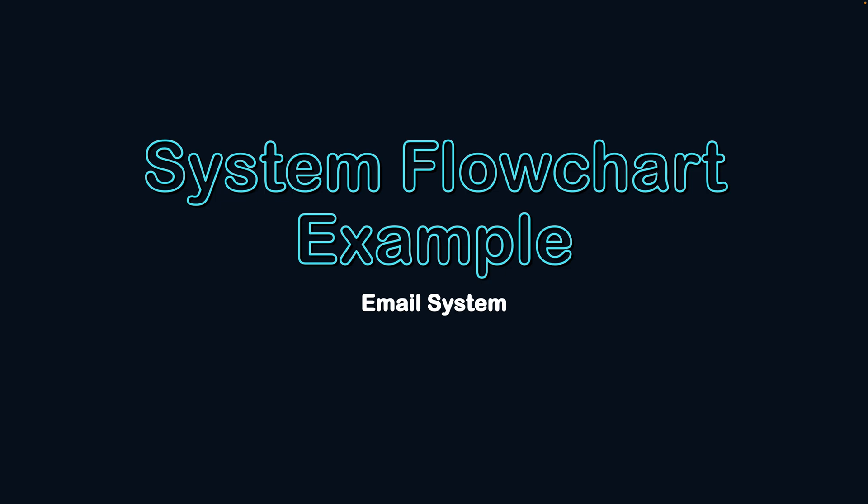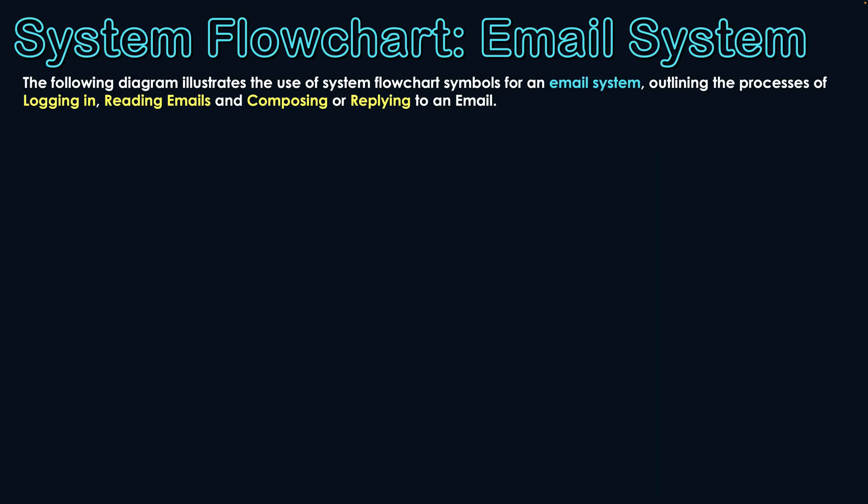System flowchart example: email system. We're going to take a look at an example of a system flowchart and draw a diagram that illustrates the use of a system flowchart and its symbols to represent an email system, specifically outlining the processes of logging in, reading emails, and composing or replying to an email.